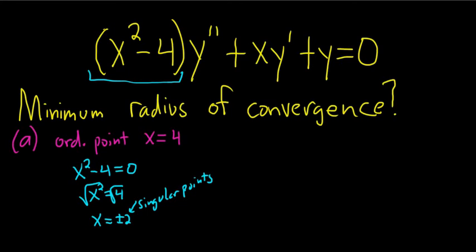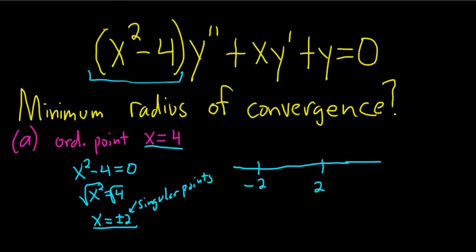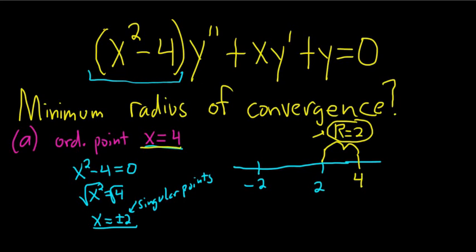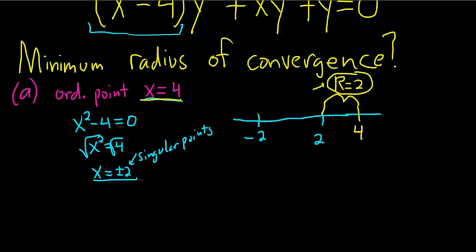So we want to find the minimum radius of convergence. The minimum radius of convergence is the distance between your ordinary point and your closest singular point. If you draw a picture, here are your singular points, and over here is your ordinary point. The distance between your ordinary point and your closest singular point is 2, and that's the minimum radius of convergence. So r is the distance between your ordinary point and your closest singular point.